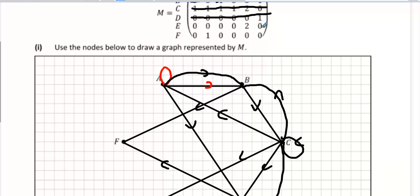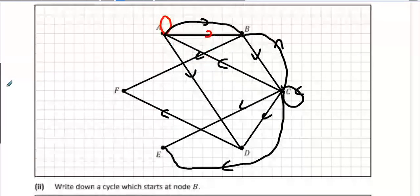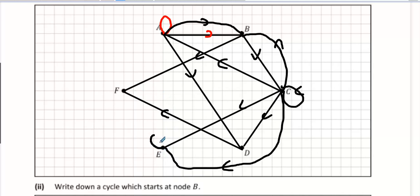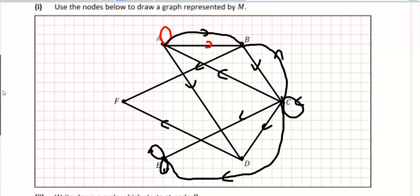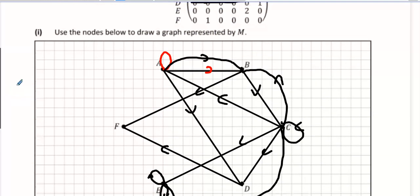E only goes to itself. E goes to itself twice. Double loop. Double loop for E. A bit like Mickey Mouse or something. And then that's it.